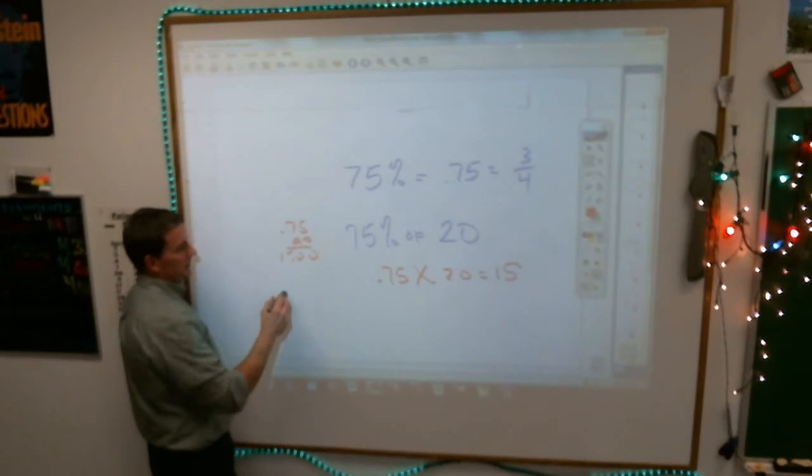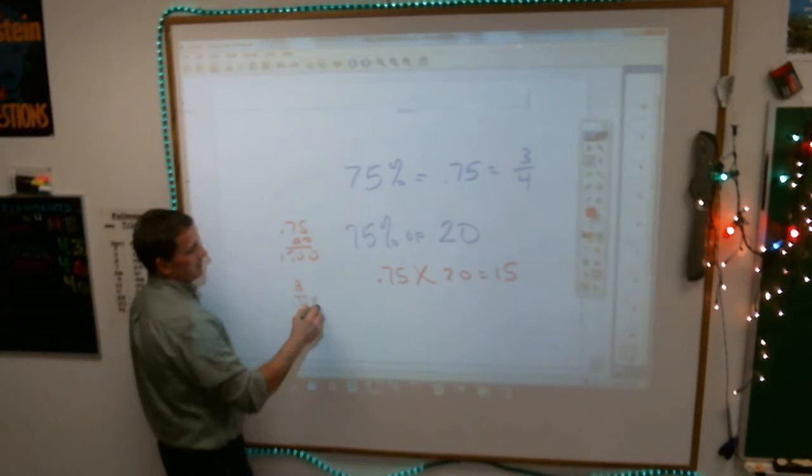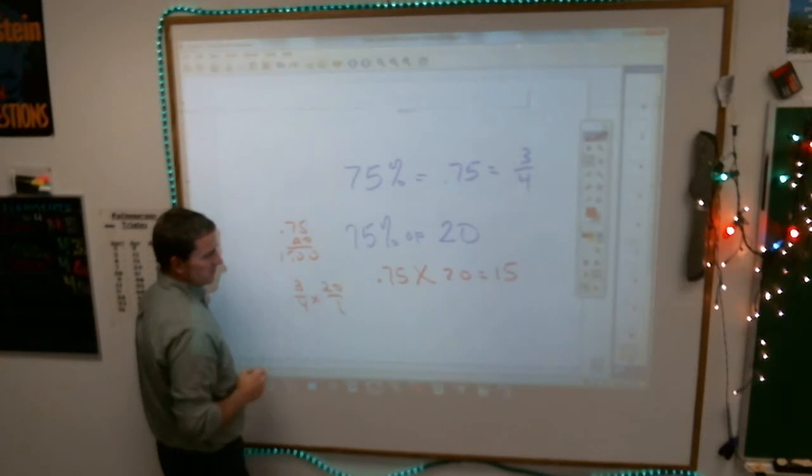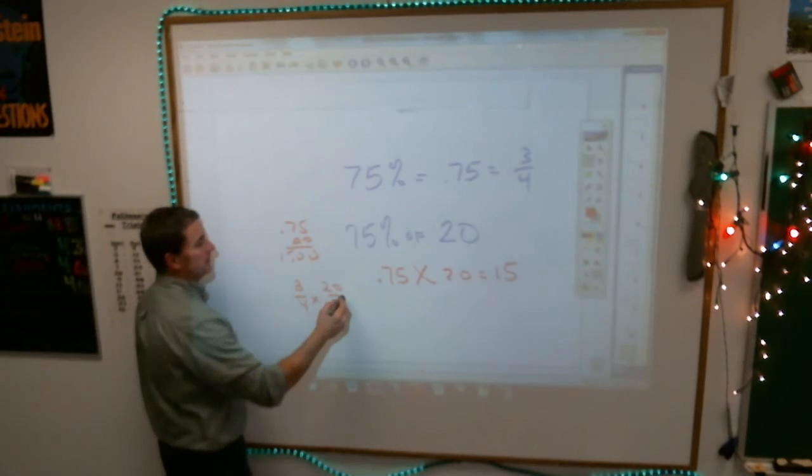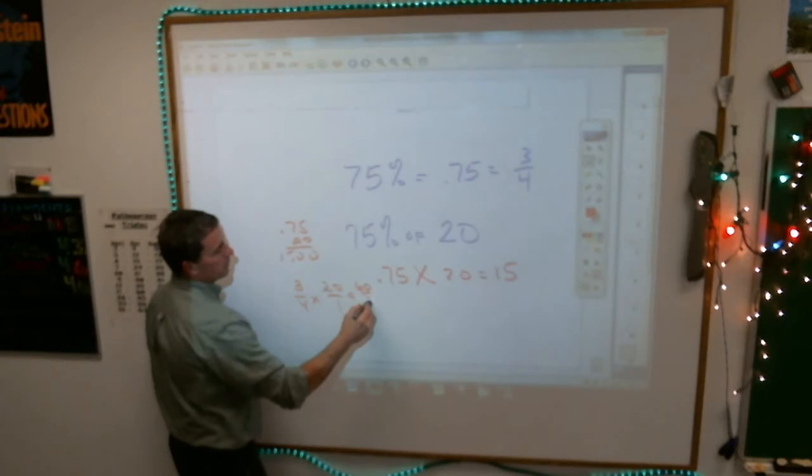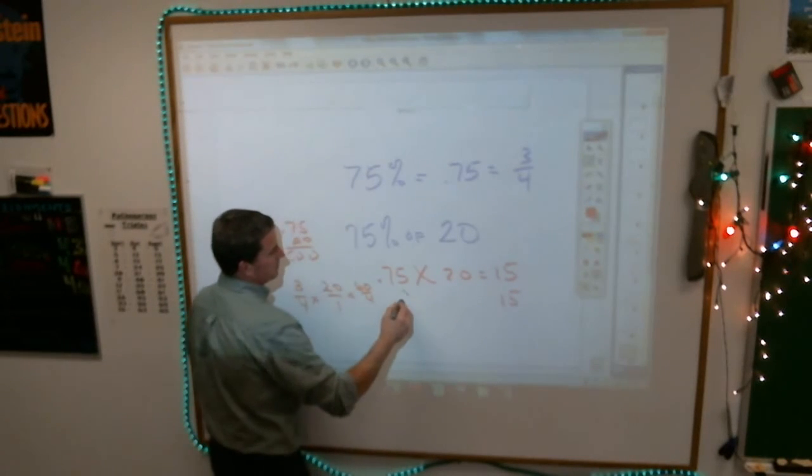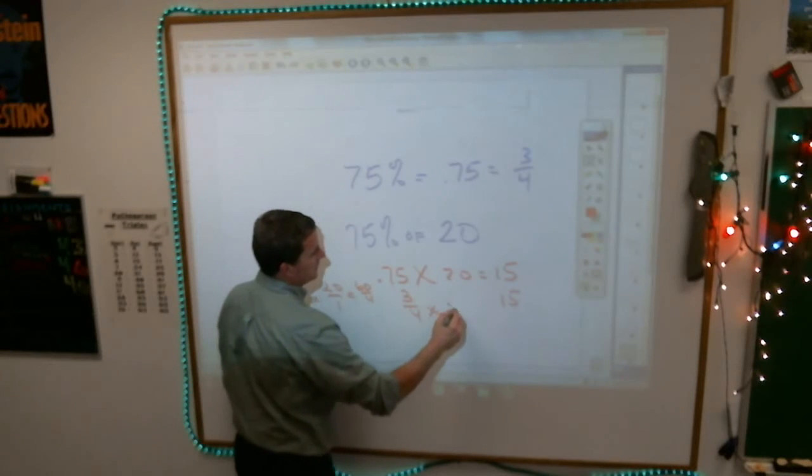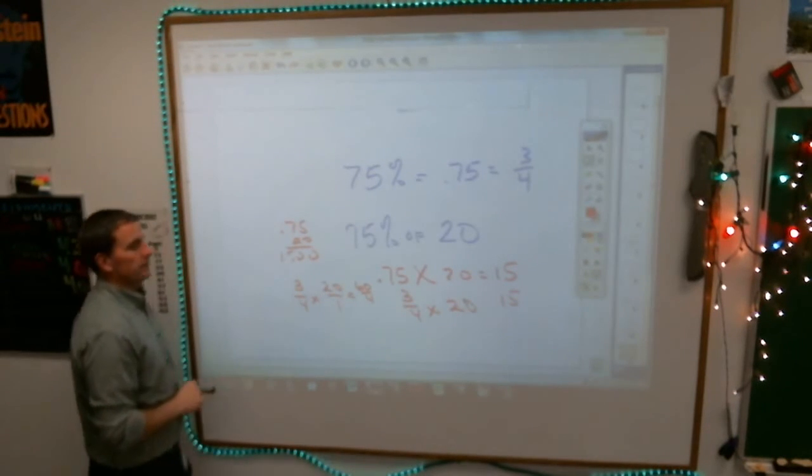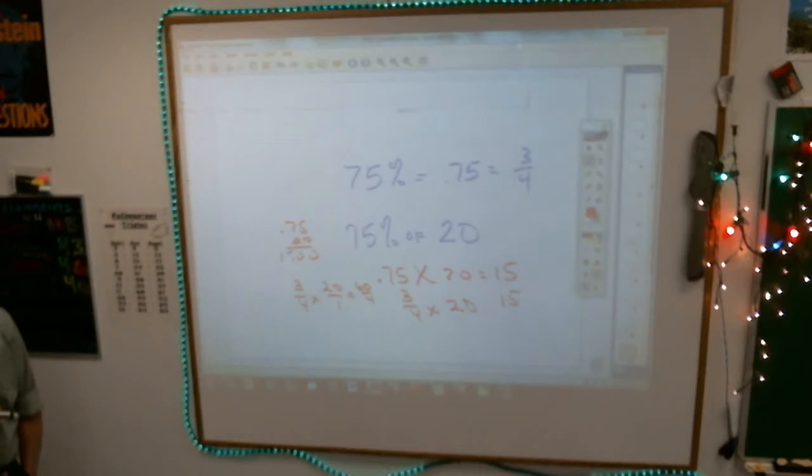Or I can take three-fourths times 20, which gives you 60 over 4, and 4 goes into 60 15 times. So three-fourths times 20, 0.75 times 20, you'll still get the same answer. And it's up to you which one to use.